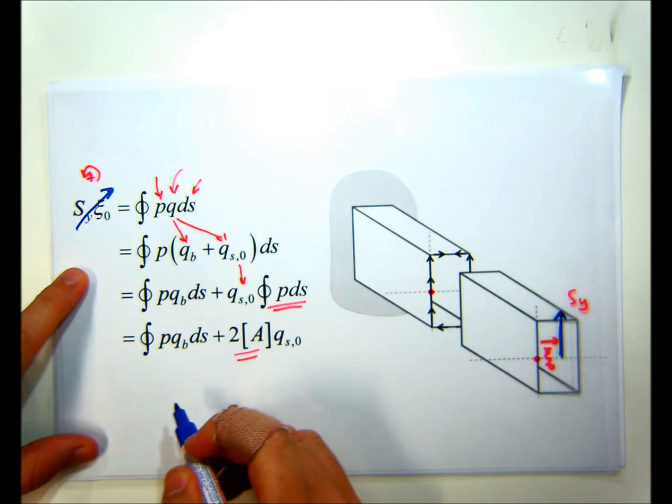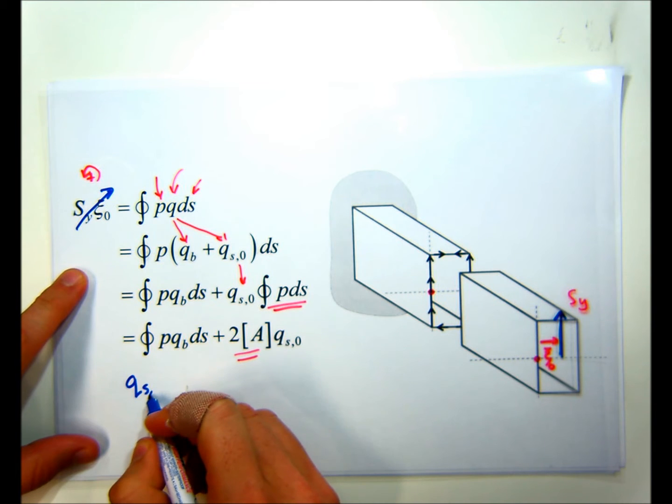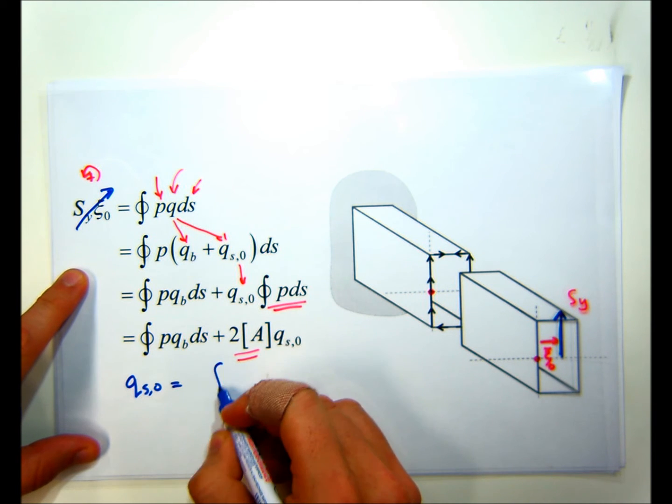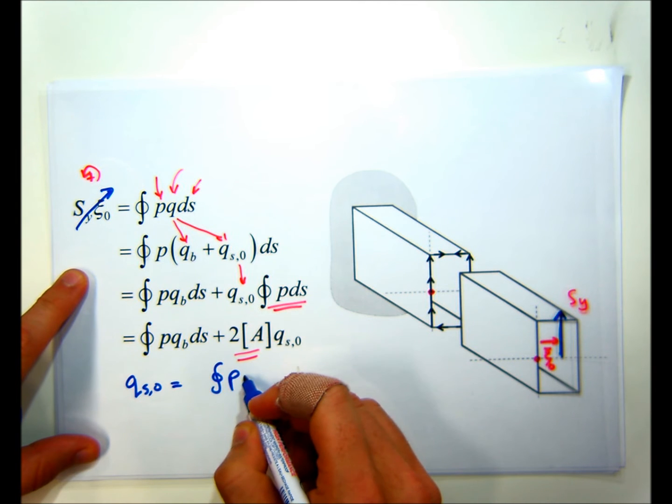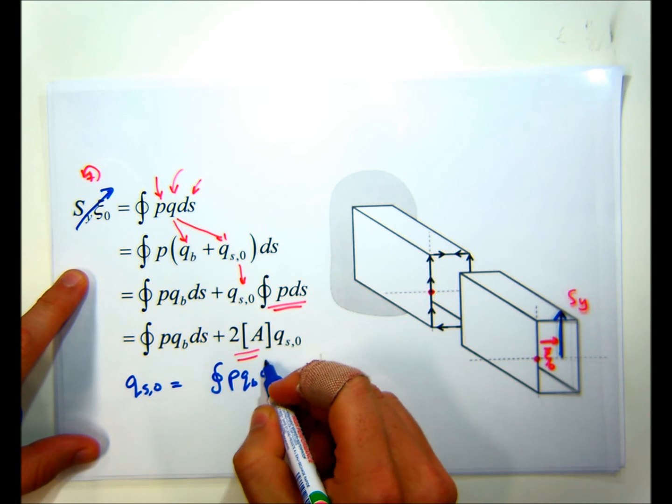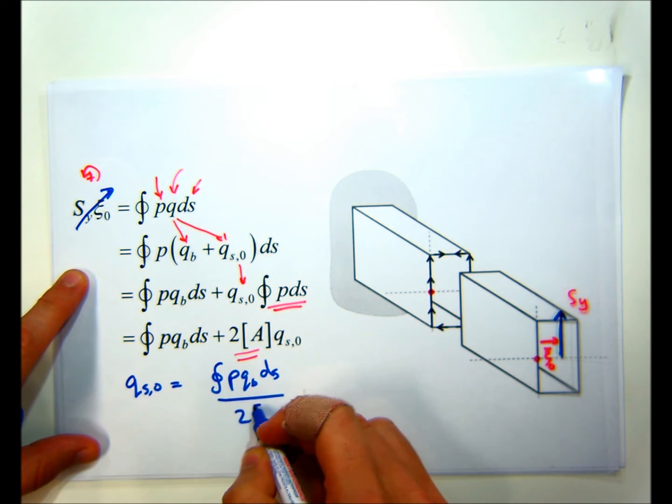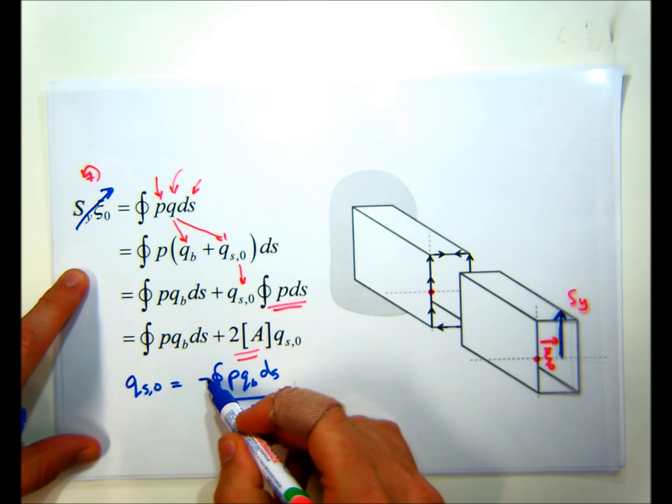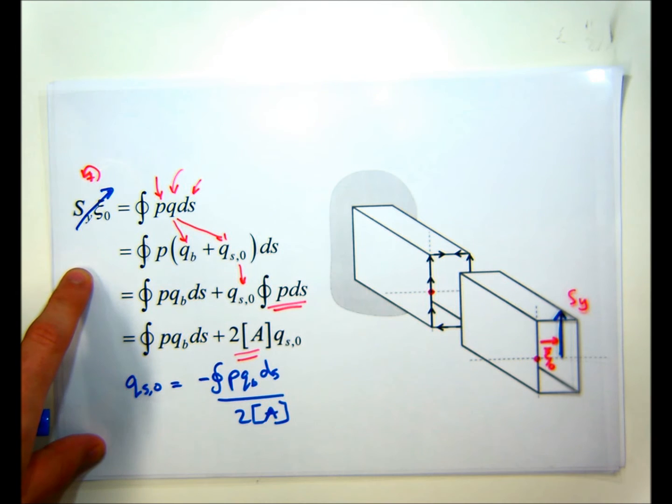And we can end up with the QS0 equals integral around the loop PQBDS on 2A. And in this case, we also need a minus sign because of the way we've defined our moments.